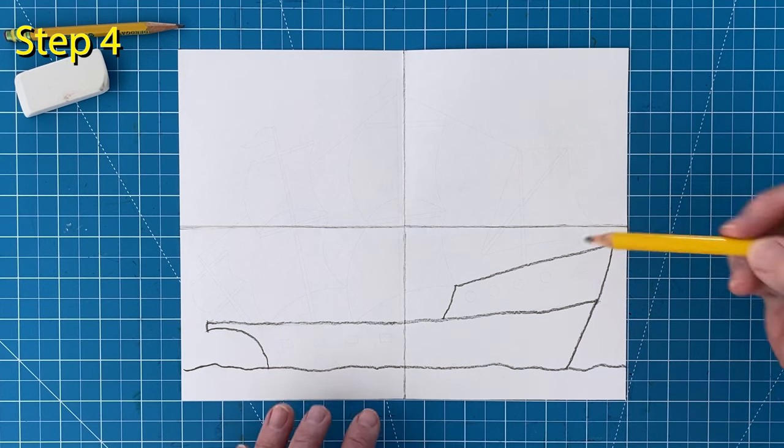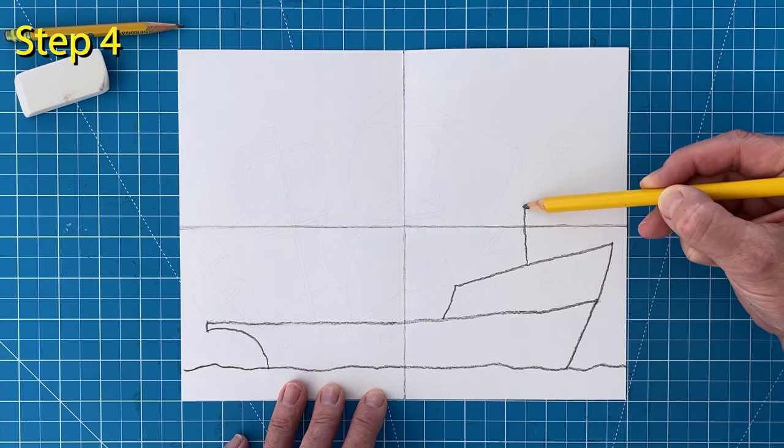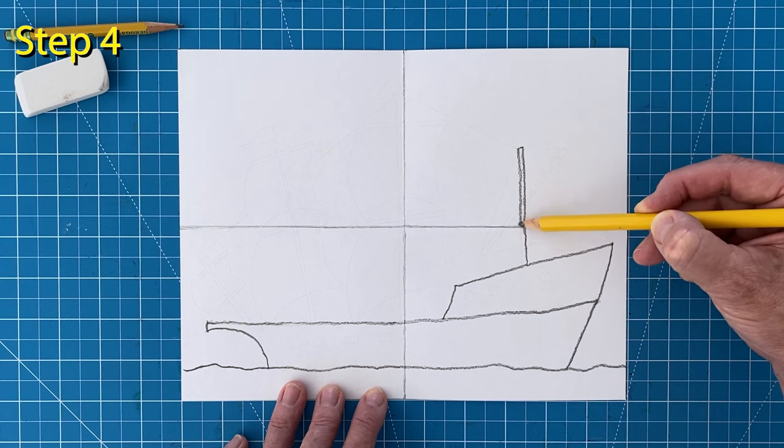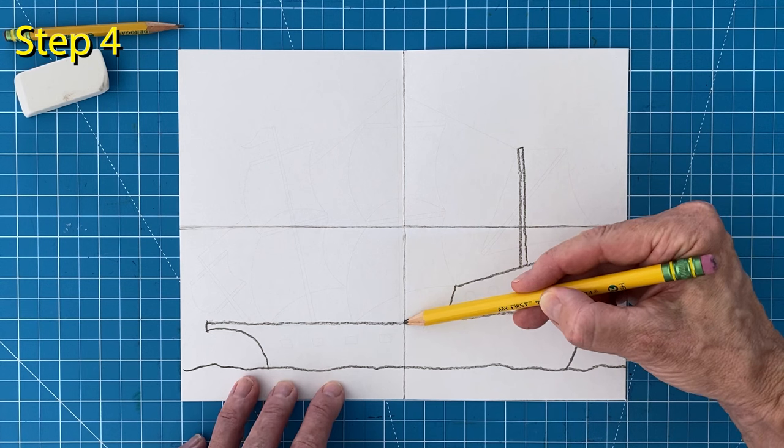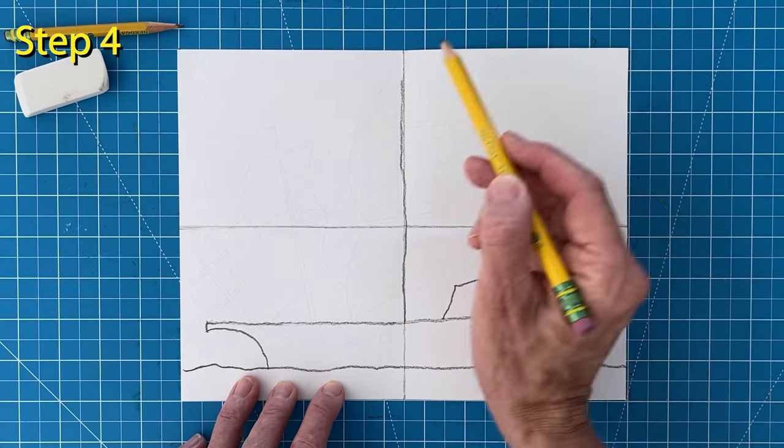Step number four. Now come the mast poles. Draw one on the right side that stands straight up and draw the next one in the very center of the paper. It goes almost to the top.